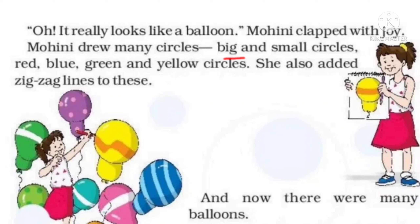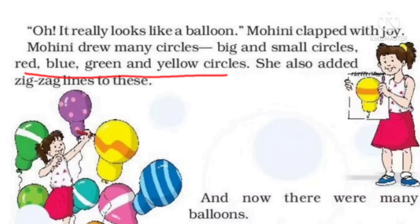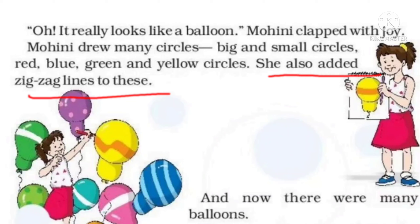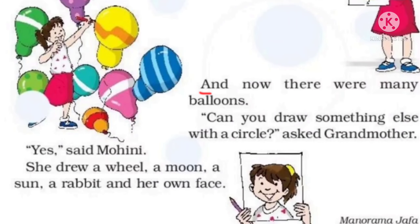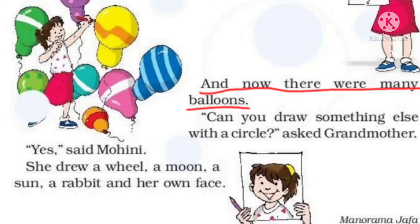Big and small circles. Usne kaisa circle banaye? Big means bade, small means chhote. Red, blue, green and yellow circles. Aur usne alag alag color ke circles banaye: red, blue, green and yellow. And she also added zigzag lines to the balloons. Aur usme kaafi saari zigzag lines bhi banayi. Now there were many balloons. Ab bahut saare balloons in logon ne banaye.